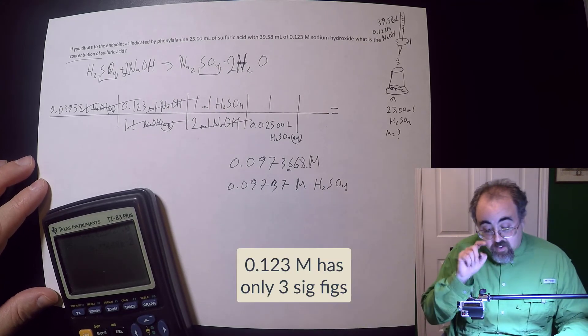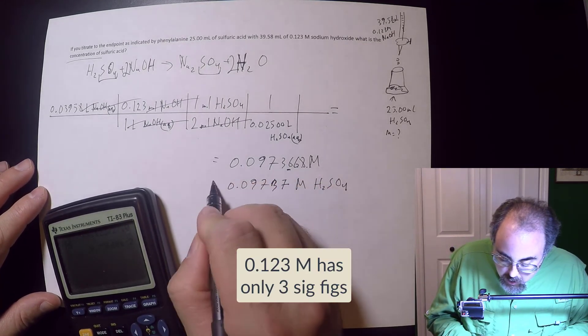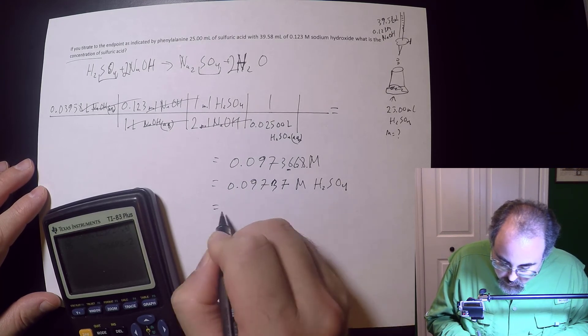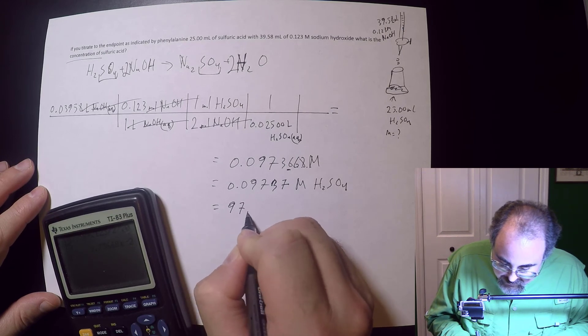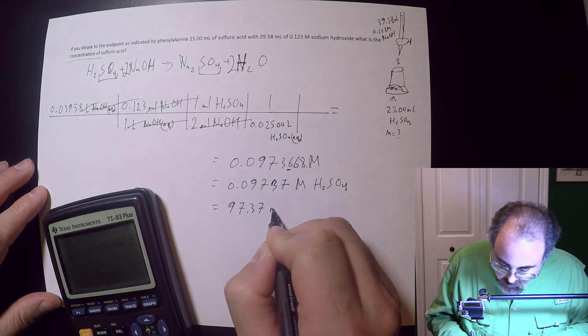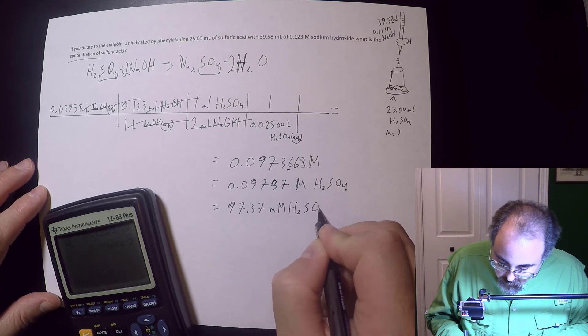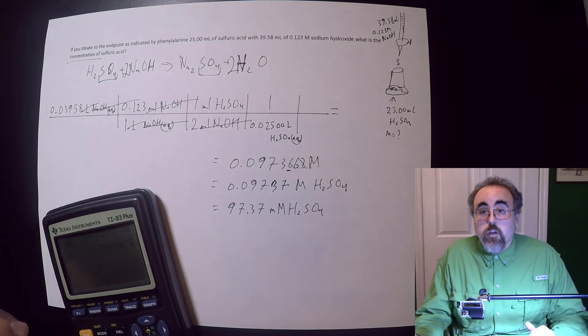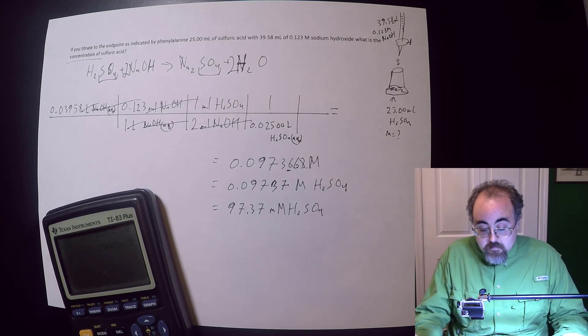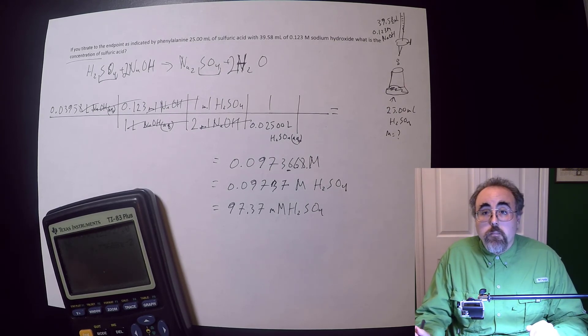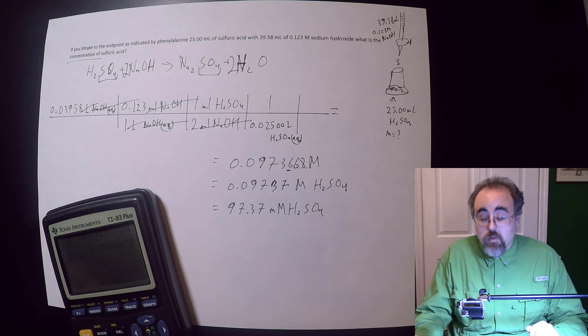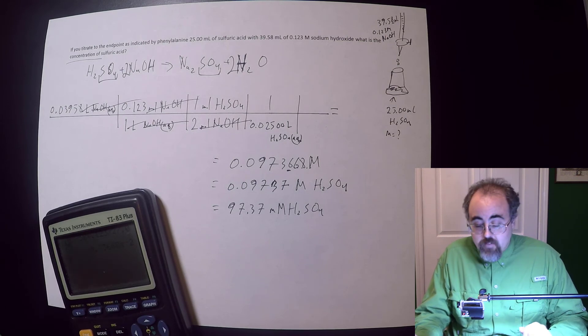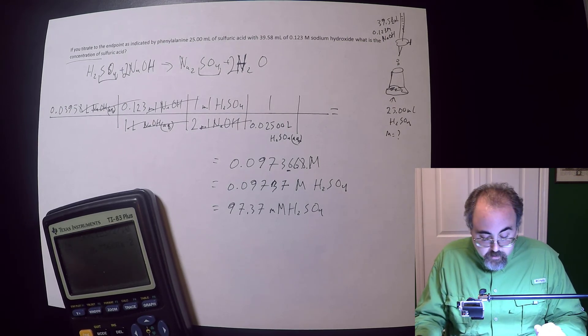Now, honestly, I can change this if I want. I can call this 97.37 millimolar H2SO4 if I would like as well. Once you're going smaller than your decimal point, once you're getting less than one category, you might want to switch your prefix. And you can put a prefix in front of molar all you'd like. And so I can make millimolar, same as I would have millimeters or milliliters.